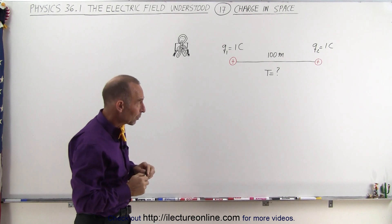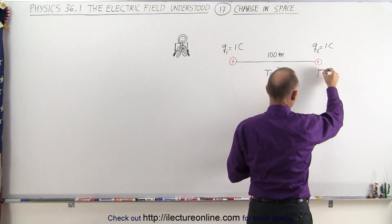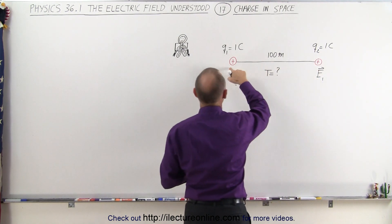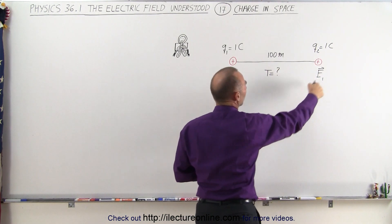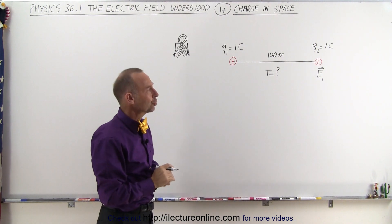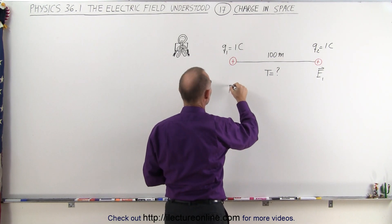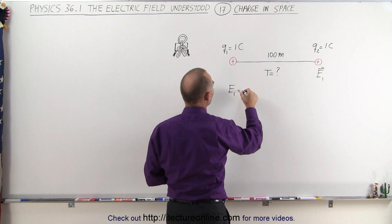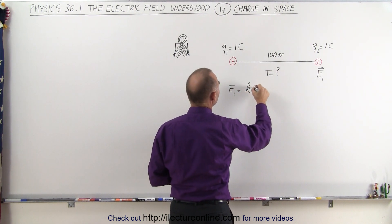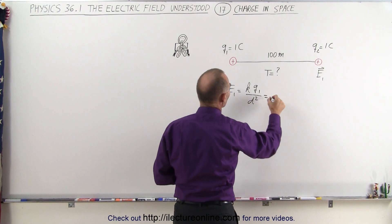So first what we're going to do is calculate the electric field over here due to the presence of charge 1. What is the electric field at the location of Q2? We can do that by using the equation: E1 is equal to — we're going to find the magnitude — K times Q1 divided by the distance squared.